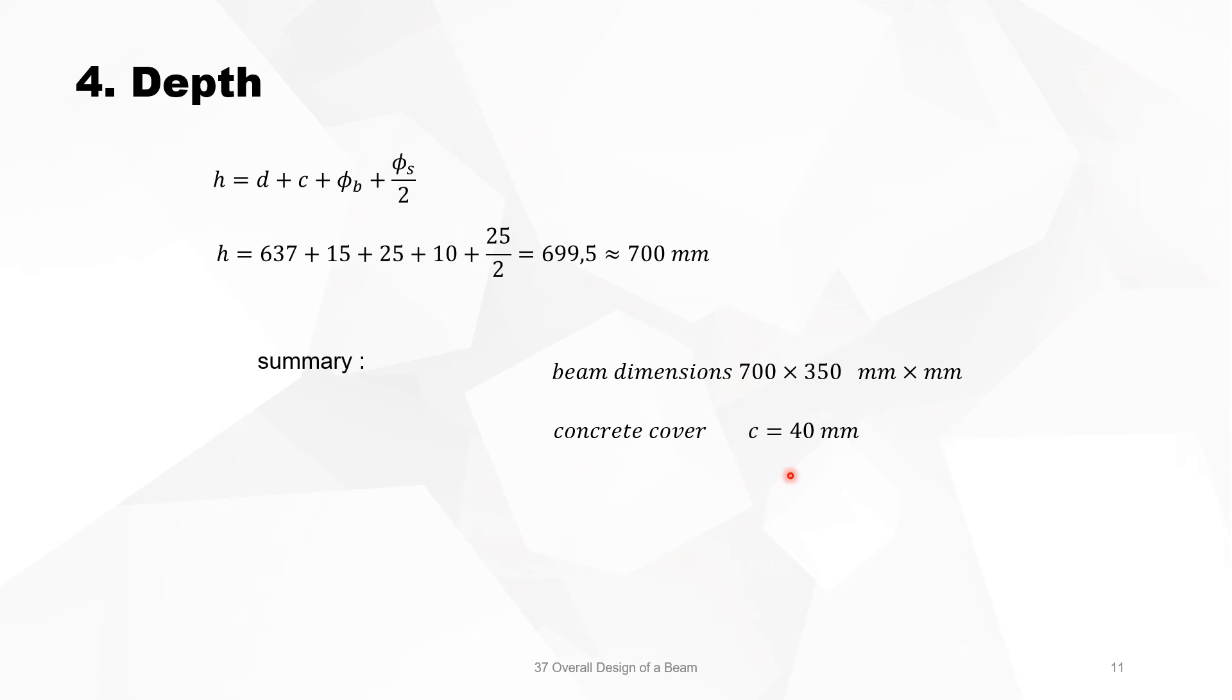Concrete cover is 40, stirrup diameter is 10, but this stirrup diameter is still estimated, it must be calculated later on, and tension reinforcement is diameter 25.